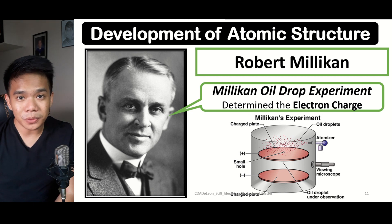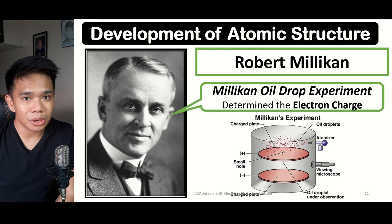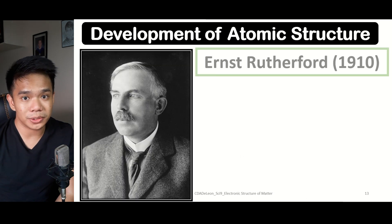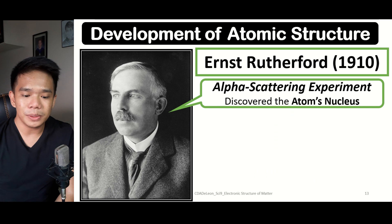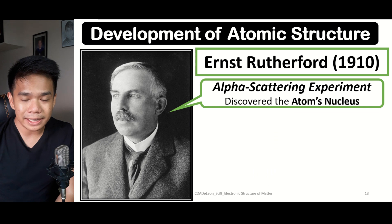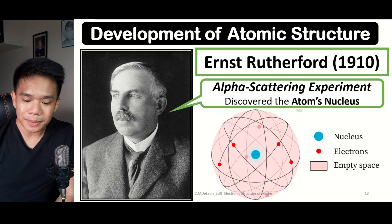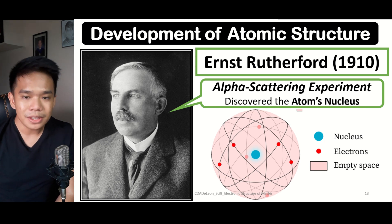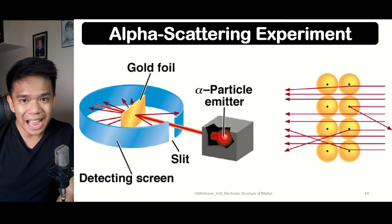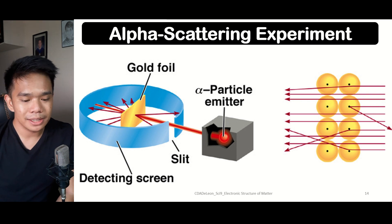After the discovery of the electron, Ernst Rutherford proved the presence of other subatomic particles. During 1910, he performed the alpha scattering experiment — also known as the gold foil experiment — which led to the discovery of the atom's nucleus. The nucleus is found at the core center of the atom, represented by a large blue dot in the center, while electrons represented by red dots freely move around the nucleus.